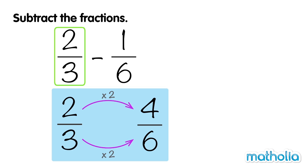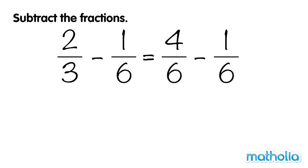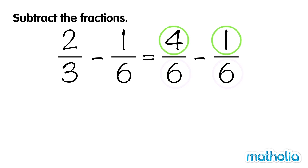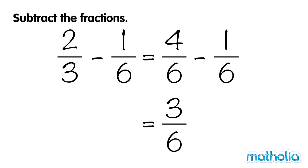2 thirds and 4 sixths are equivalent fractions, so we can rewrite 2 thirds minus 1 sixth as 4 sixths minus 1 sixth. The denominators are now the same — the fractions are like fractions. Let's subtract the numerators: 4 minus 1 equals 3. So 4 sixths minus 1 sixth equals 3 sixths, and 2 thirds minus 1 sixth equals 3 sixths.